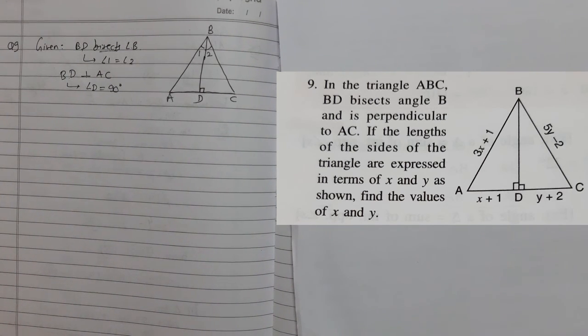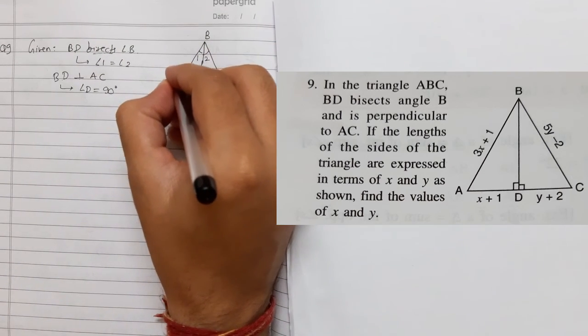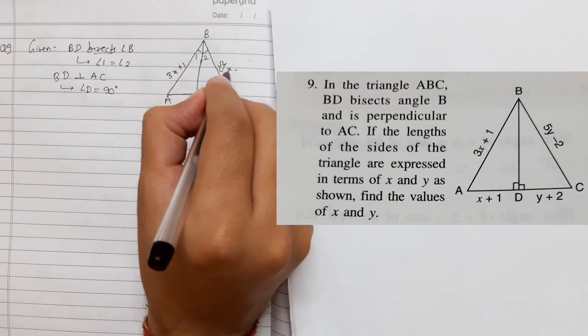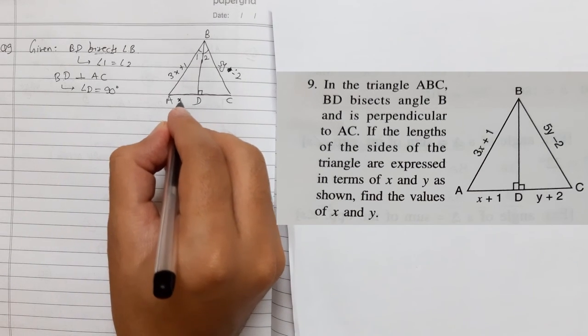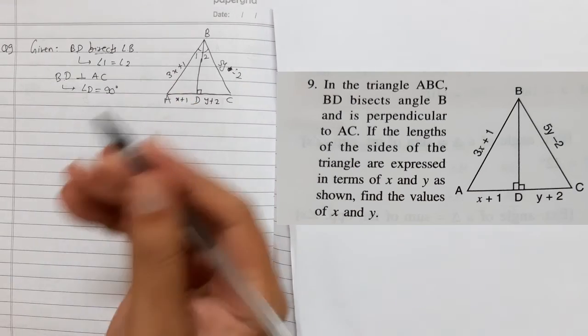If the length of the sides are given in terms of x, I am writing them: 3x plus 1, 5y minus 2, and here it is x plus 1 and y plus 2. We need to find the values of x.